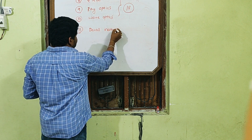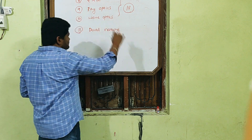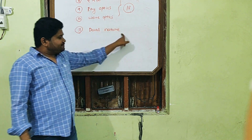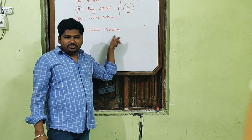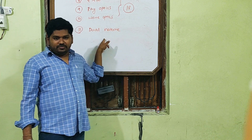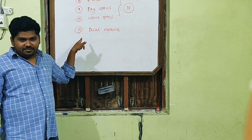Dual Nature is a completely new chapter for you in Modern Physics. Here we discuss how an object has two natures — particle nature and wave nature.